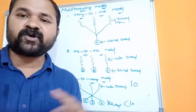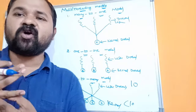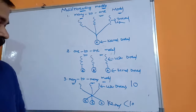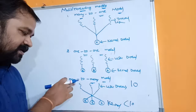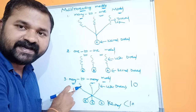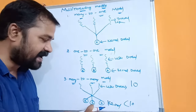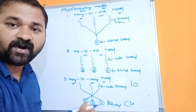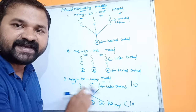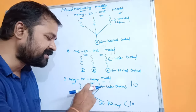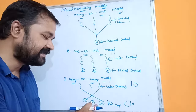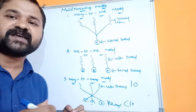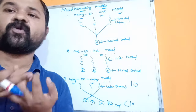We can say that out of all these approaches, the many-to-many model is the best, and nowadays all operating systems use the many-to-many model. In this model, each user thread is mapped to multiple kernel threads, so many user threads are mapped to many kernel threads. Thread one is mapped to three kernel threads, thread two to three kernel threads, and thread three to three kernel threads. This is about multi-threading models in operating systems.